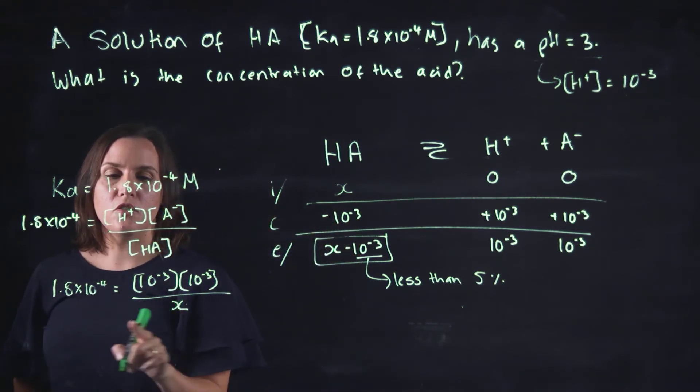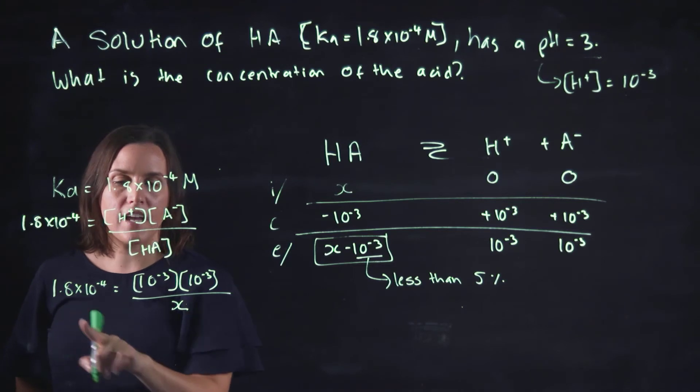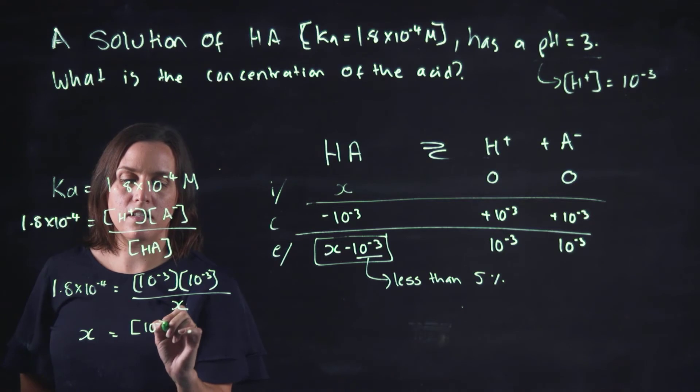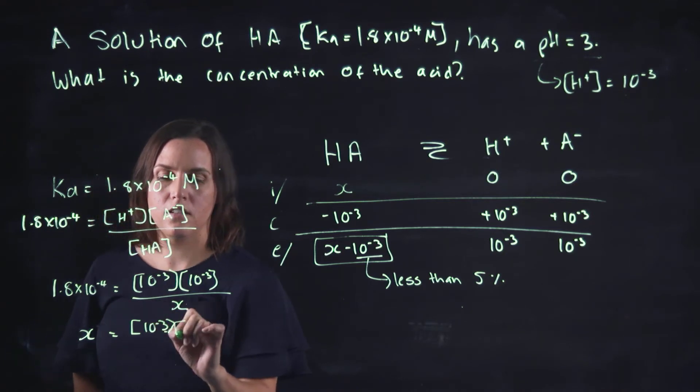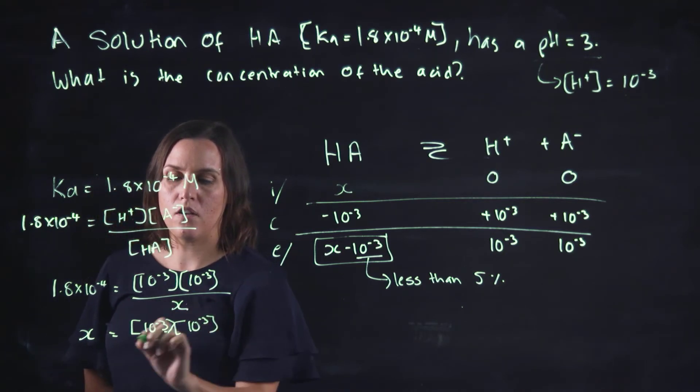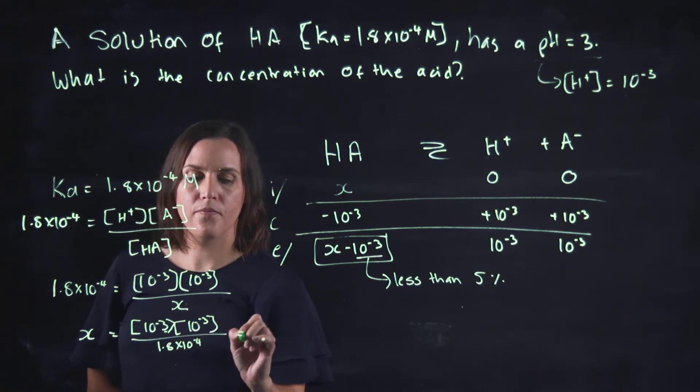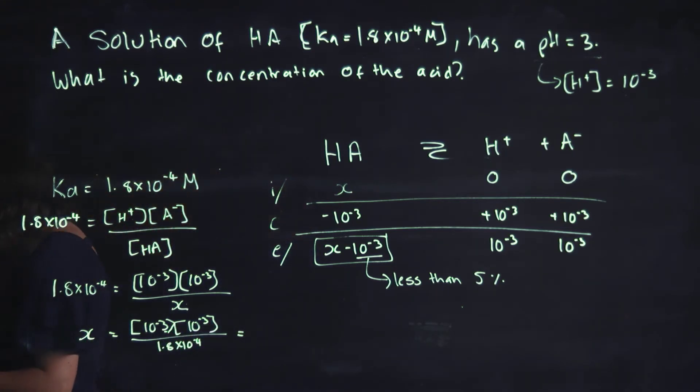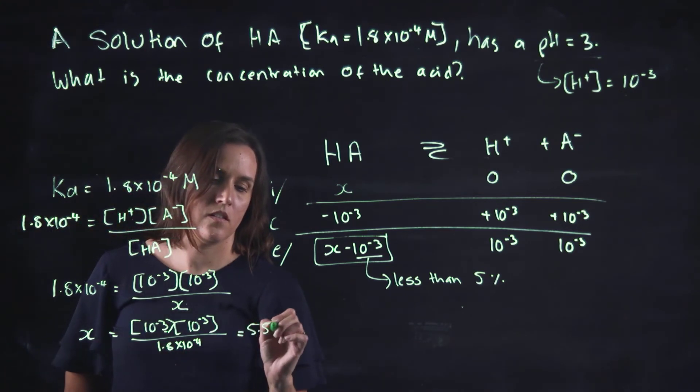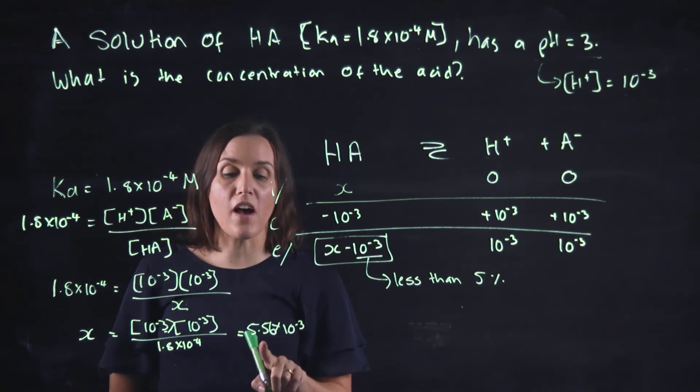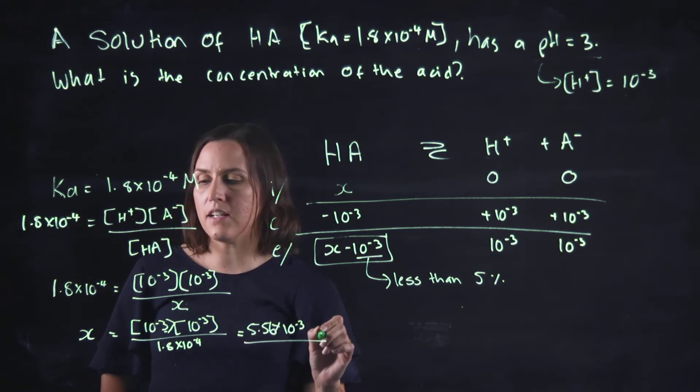So then to solve, take this to the other side and bring this back down. So X equals 10 to the minus 3, 10 to the minus 3 over 1.8 by 10 to the minus 4. So it gives me 5.56 by 10 to the minus 3.